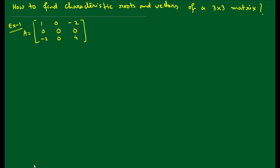Hello everyone and welcome back to yet another lecture on matrices. In our previous two lectures, we learned what a characteristic matrix is, what a characteristic vector is, and how to find characteristic roots and vectors of a 2×2 matrix. Here we will try to find characteristic roots and vectors of a 3×3 matrix. If you haven't seen the 2×2 lecture, please watch that first, then this will be very easy.